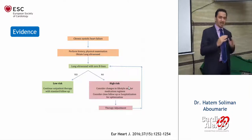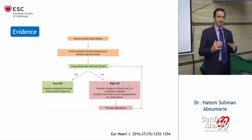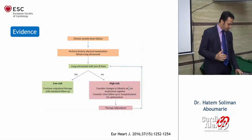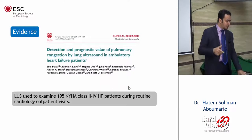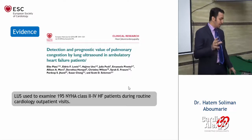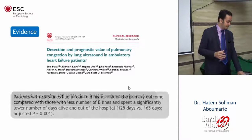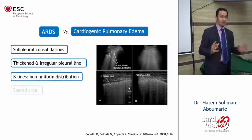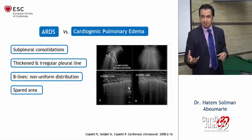Here is a nice algorithm guiding the utilization of B-lines for assessment and risk stratification of chronic systolic heart failure patients, where you can adjust therapy accordingly. Another study published in the European Heart Journal utilized B-lines as a tool for detection and prognostication of pulmonary congestion in ambulatory heart failure patients.